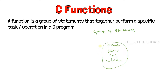Every C program has at least one function. In a C program, the only mandatory function is main. We can use this program in the main function. In this main function, we use printf, scanf, while loop, do-while loop, if conditions, etc.